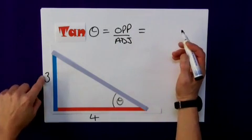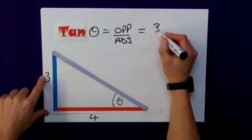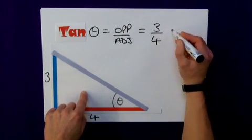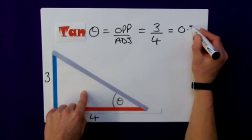Now, in my example, the opposite side is three. The adjacent side is four. And this is a ratio that can also be written down as 0.75.